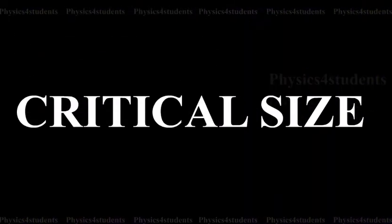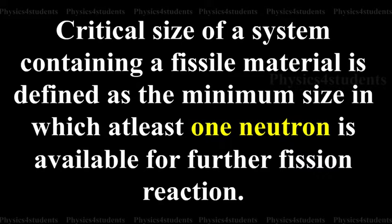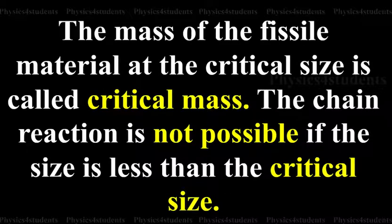Critical Size. Critical size of a system that contains a fissile material is defined as the minimum size in which at least one neutron is available for further fission reaction. The mass of the fissile material at the critical size is called critical mass. The chain reaction is not possible if the size is less than the critical size.